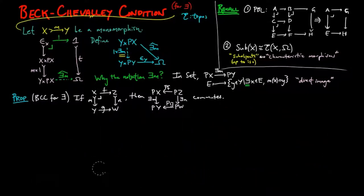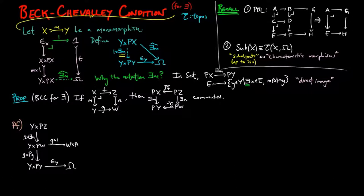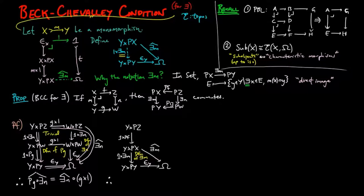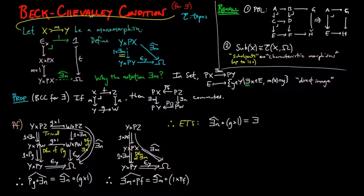Now let's prove this for a general topos. First, let's determine what the exponential adjoints are to the two diagonal morphisms in the second diagram above. Consider the exponential adjoint of Pg ∘ ∃n. The following diagram commutes by the definition of Pg and the definition of ∃n, showing that the exponential adjoint to Pg ∘ ∃n is ∃n-hat ∘ (g cross 1). It is also easy to see that the exponential adjoint to ∃m ∘ Pf is ∃m-hat ∘ (1 cross Pf) by the definition of ∃m. Therefore, it is enough to show that these two characteristic morphisms are equal.